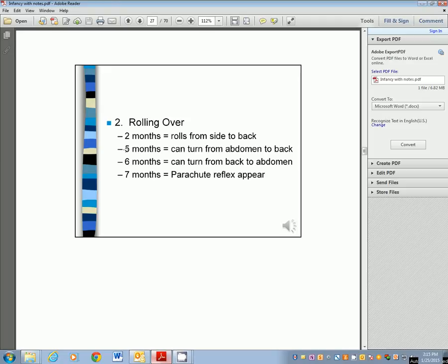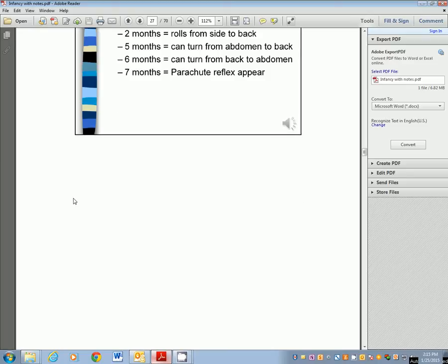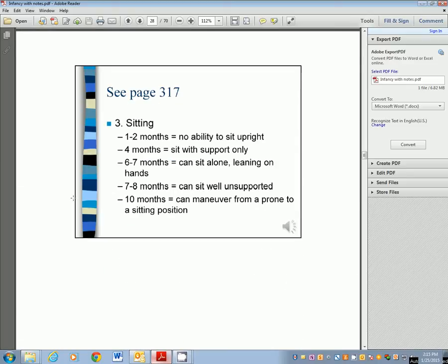Rolling over. By two months, they can roll from back to side. Five months, they can turn from their abdomen to their back. Six months, they can turn from their back to their abdomen. Seven months, they have what's called the parachute reflex. Page 317 shows you the parachute reflex, as the baby's going down, they're going to put their hands downward.